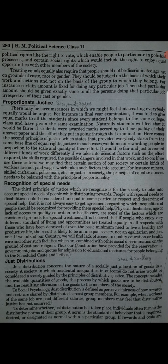Next is just distribution. Just distribution consists of the nature of a socially just allocation — meaning the fair share of goods in a society. A society in which incidental inequalities do not arise would have equitable allocation of goods. In social psychology, just distribution is defined as preserving fairness of how rewards and costs are shared across group members. For example, when workers of the same job are paid different salaries, group members may feel that distributive justice has not been considered.